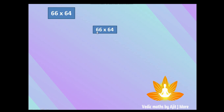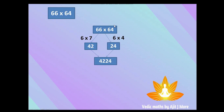What is the consecutive digit after 6? That is 7. Multiply 6 with 7, you get 42 — and that is going to be the first part of your answer. The second part is very simple: just multiplication of the unit place digits, so 6 × 4 = 24. Combine them and you get 4224 — and that is your answer.